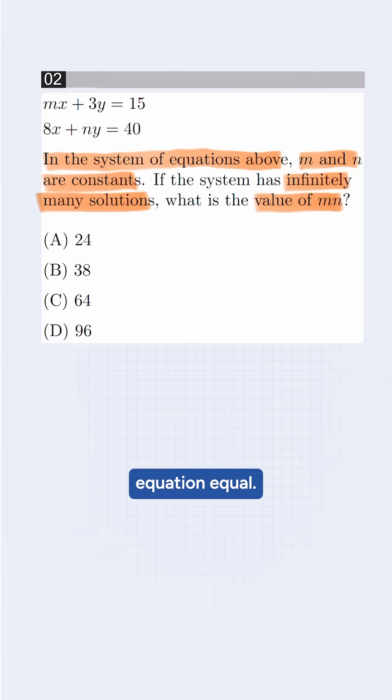First, to make the equations equal, we need to find what number should be multiplied to 15 to get 40. Here, the trick is to divide 40 by 15. This will get 8 by 3.